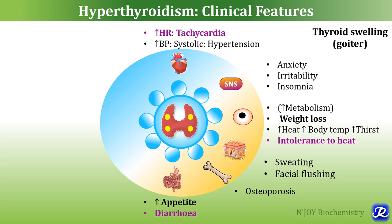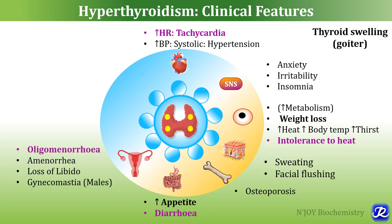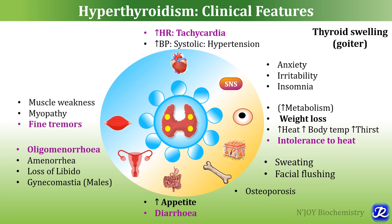Hyperthyroidism is characterized by weight loss in spite of increased appetite. Thyroid hormones also affect the reproductive system — in women the clinical features are oligomenorrhea and amenorrhea, and there can be loss of libido and gynecomastia in males. Thyroid hormones affect muscles as well, so increased thyroid function leads to muscle weakness, myopathy, and fine tremors.